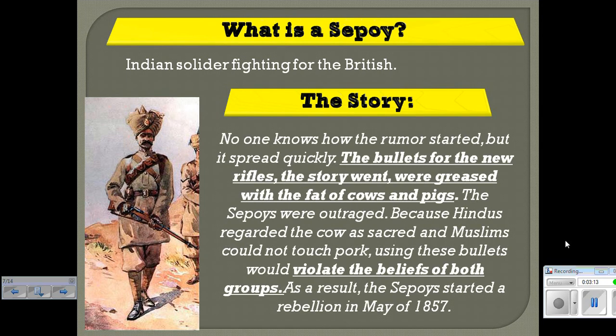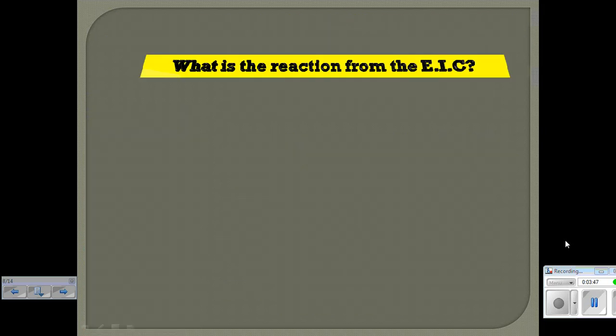No one knows how the rumor started, but it spread quickly. The bullets for the new rifles, the story went, were greased with the fat of cows and pigs. The sepoys were outraged because Hindus regarded the cow as sacred and Muslims could not touch pork — using these bullets would violate the beliefs of both groups. As a result, the sepoys started a rebellion in May of 1857. The most important point is that it doesn't matter if the rumor was true or not, but this had a big effect on the Indians. They were very upset that their culture was being disrespected, and so they rebelled.